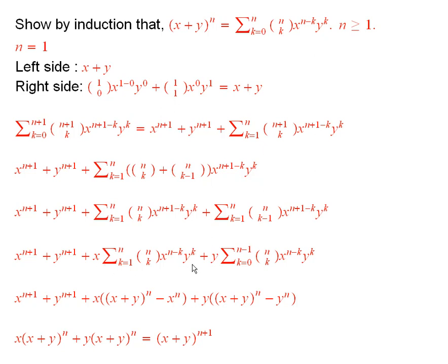Now look, these sums here look just the way they ought to, to use the induction hypothesis, except it would need to start at 0, and this one would need to end at n. So what I'll do is just start the sum at 0, use the induction hypothesis, and that gives me x plus y to the n. Then I subtract off the term that I added in, which is the term when k is equal to 0, which is just an x to the n.